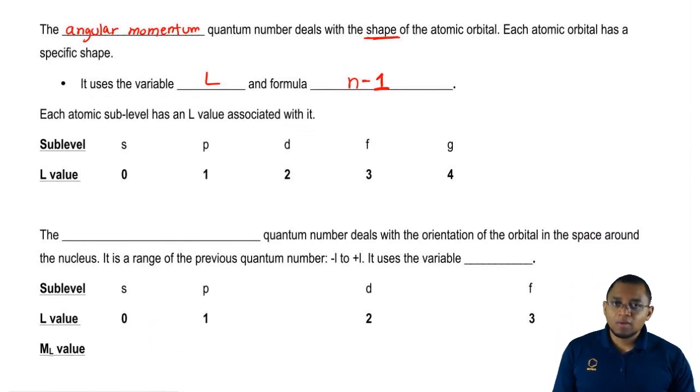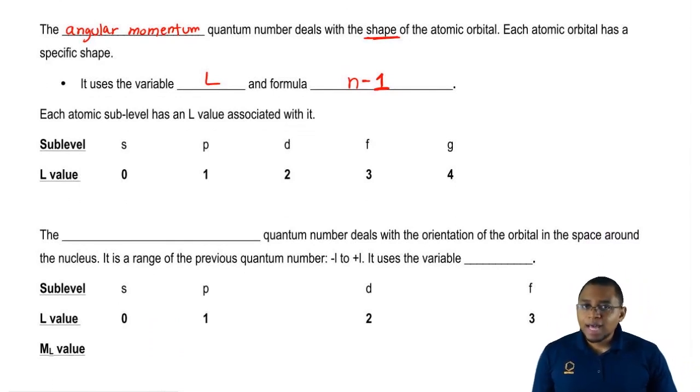If we know the sublevel letter, we know what the L value is. If the sublevel is S, then L is 0. If it's P, it's 1. D it's 2. F it's 3.